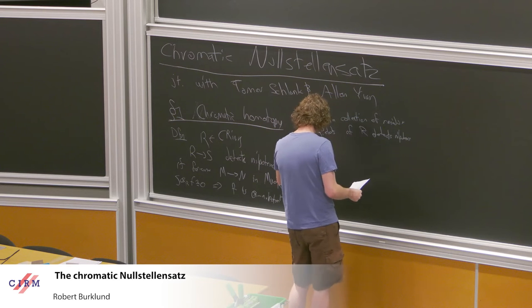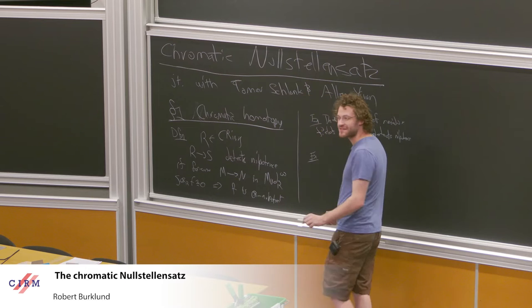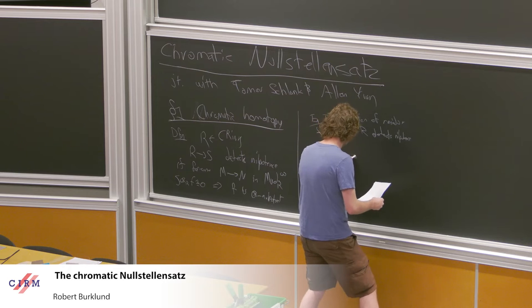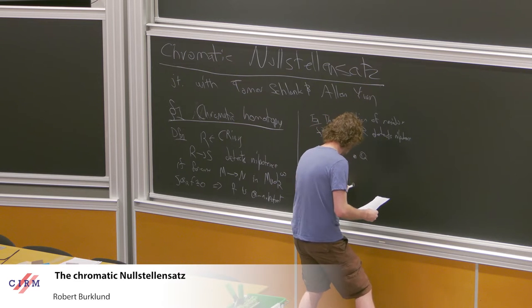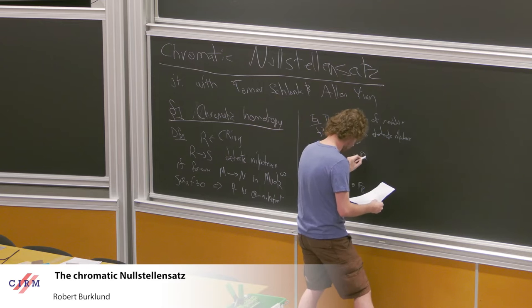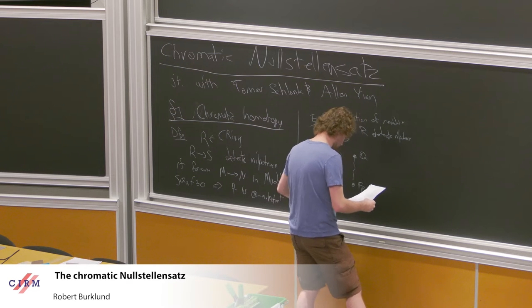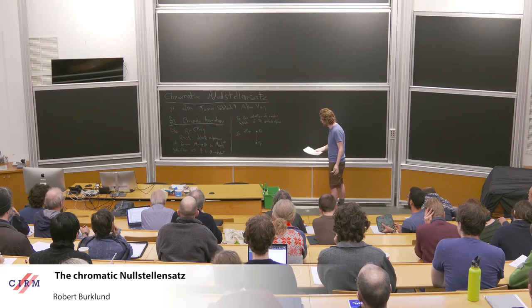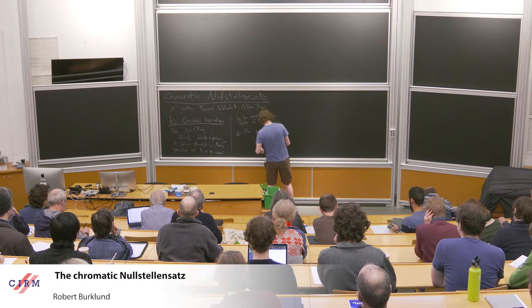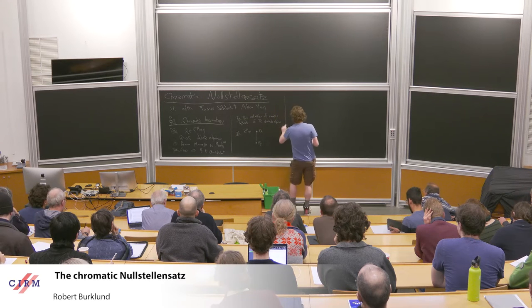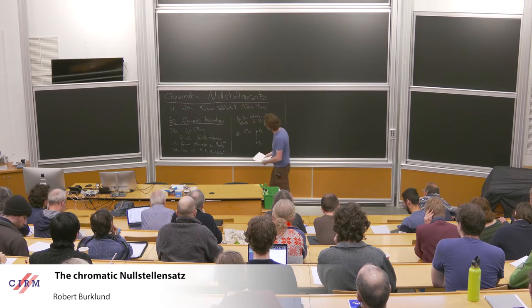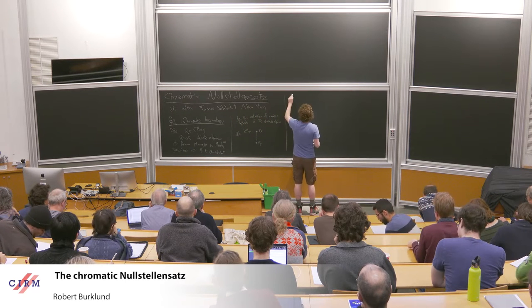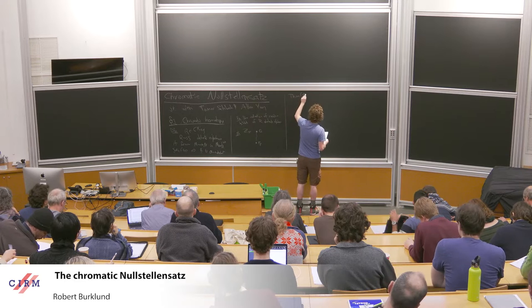As an example, I'm going to draw a Zariski spectrum of a ring on the board. So Z localized at p: we've got Q and we've got F_p. Between them is a little specialization, and we should view these points - F_p is sitting in codimension one inside, above the generic point. And so where am I going with all this? What is the analogous picture in the category of spectra? That comes to us via the Devinatz-Hopkins-Smith nilpotence theorem.